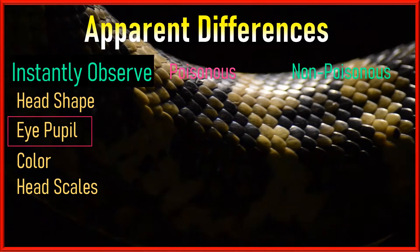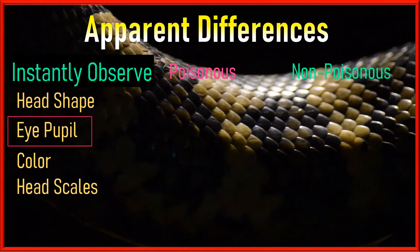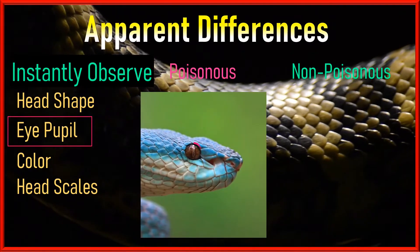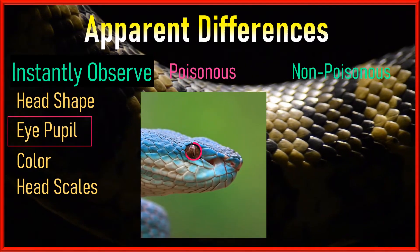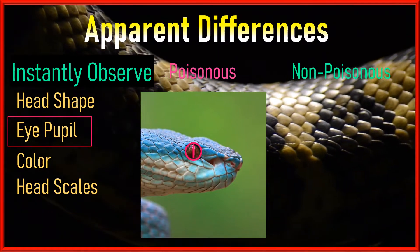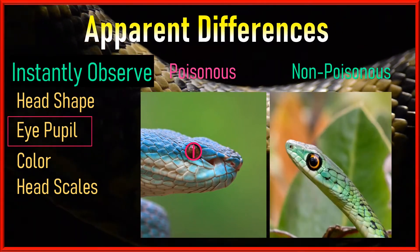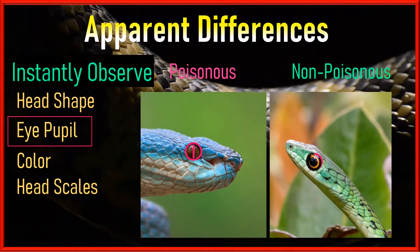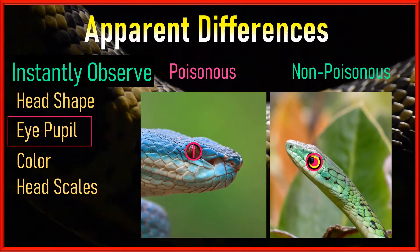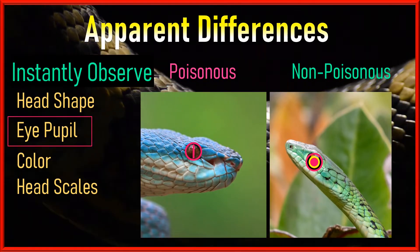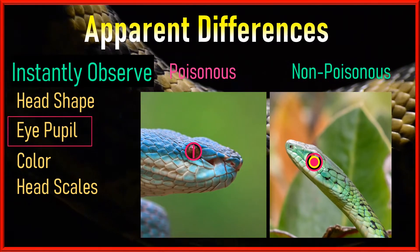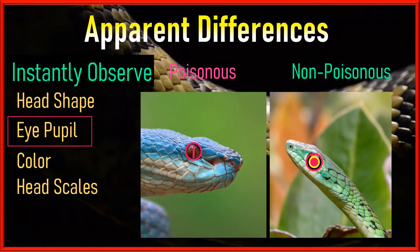Secondly, if possible, try to look at the eyes of the snake. If the pupil is like a vertical line in the center of the eye, it's venomous. If the pupil shape is round like a ball, similar to our eyes, it is most likely non-venomous — but safety must be observed.